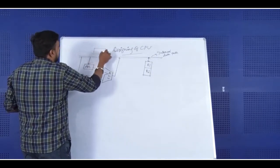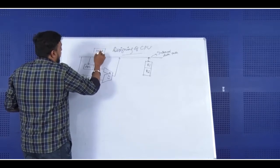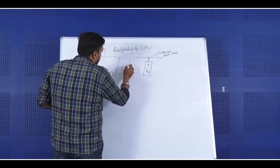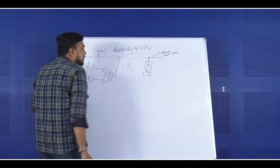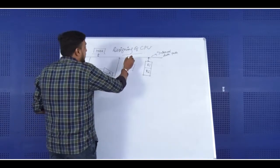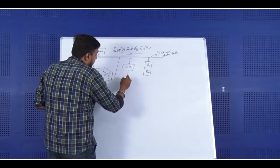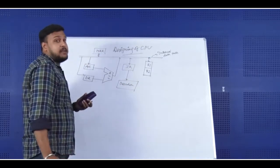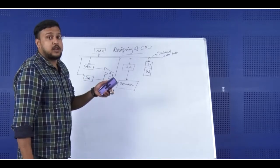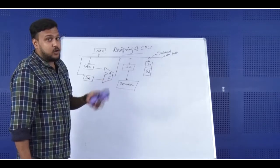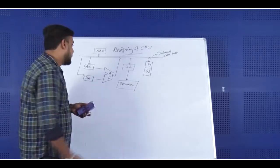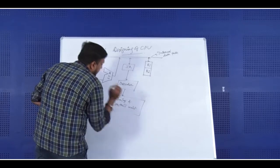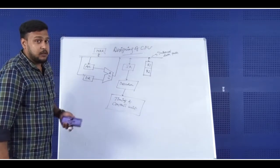Here, we will be having one particular register — the MAR, or Memory Address Register. Here, we will be having one special purpose register called the Instruction Register, which will hold the instruction for the very first time when it is fetched from the memory. Then it will be fetched to the decoder. In high-level languages, the language is not understandable by the computer, which is why we need the decoder to decode it to machine-level language. After decoding, it is fetched to the timing and control unit, which generates the control signal — also known as CU.